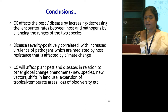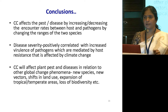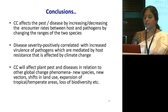In conclusion: climate change can affect pest or disease by increasing or decreasing encounter rates between host and pathogen by changing the ranges of two species. Disease severity is positively correlated with increased virulence of pathogens mediated by host resistance affected by climate change. Climate change will affect plant pests and disease in relation to other global change phenomena such as new species, new vectors, shift in land use, expansion of tropical or temperate areas due to temperature change, and loss of biodiversity.